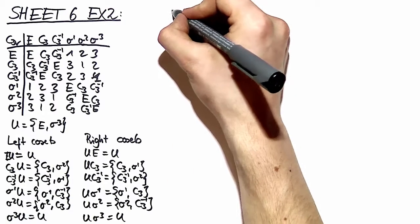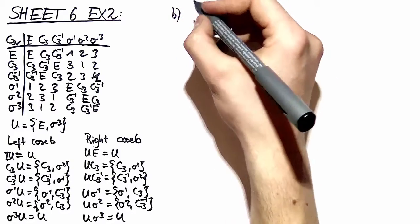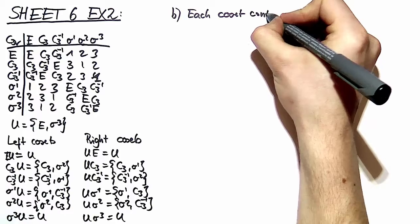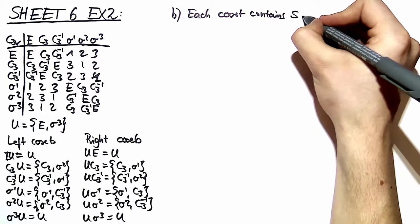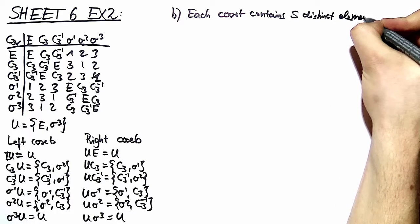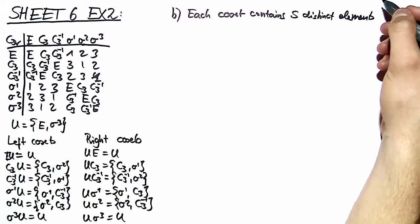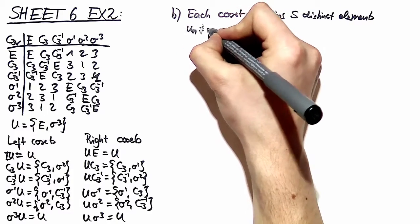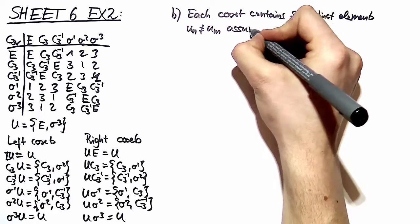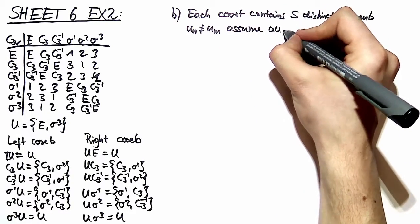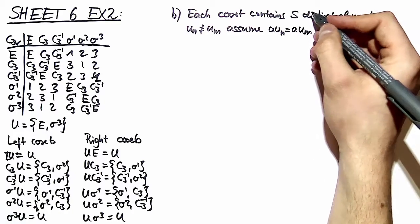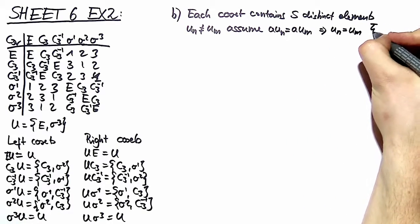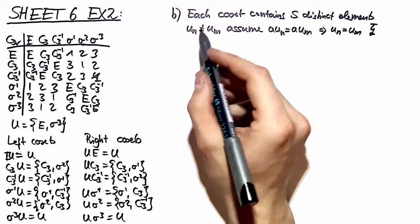Now we want to make some observations and prove them. The first observation we want to prove is that all elements are distinct in our coset. This proof is trivial given the hint in the exercise. The hint says we assume u_n is not equal to u_m, and then assume that we have the same coset element given by these two elements. Multiplying this equation by a⁻¹ yields u_n equal to u_m, which is a contradiction to our statement.